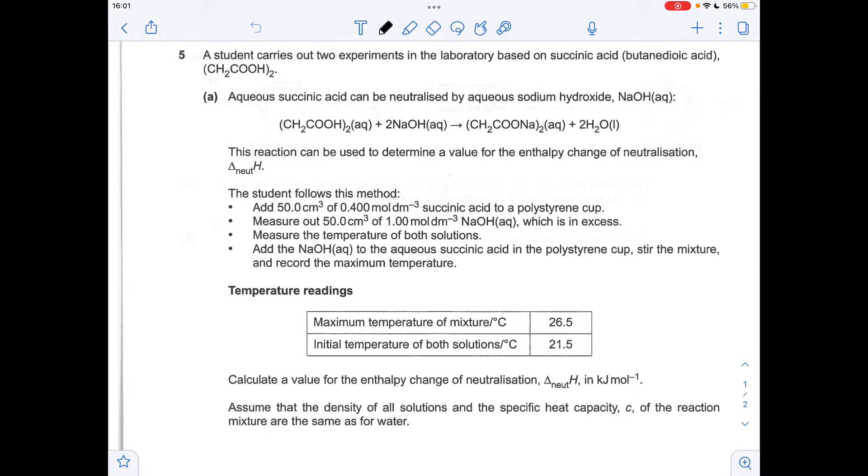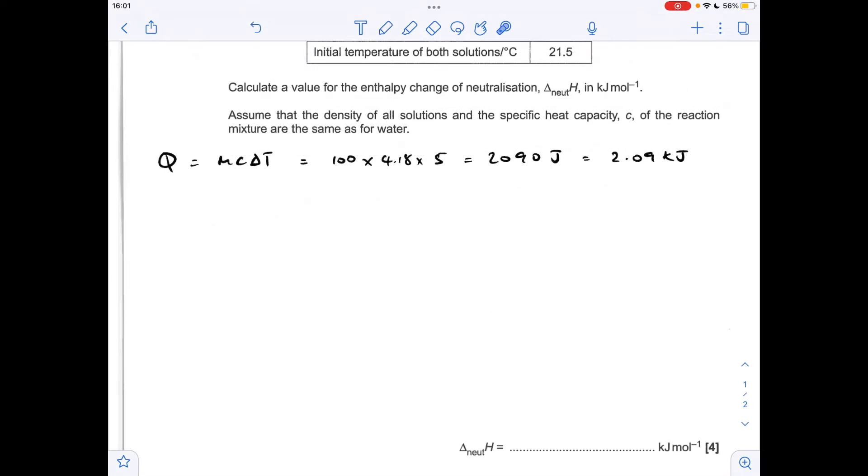Okay, so I'll make a start. First thing I'm going to do is work out a value for the enthalpy change of neutralisation from the data. It's obviously a calorimetry experiment, so we'll do that by using the Q equals MC delta T equation.